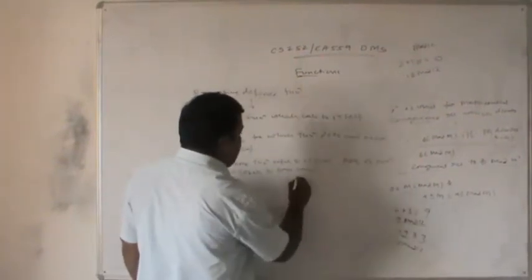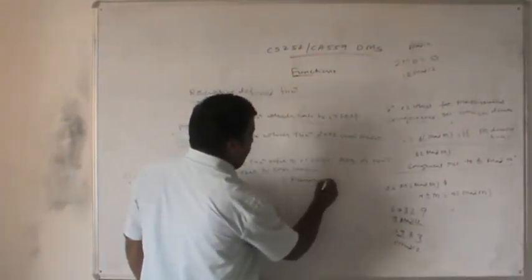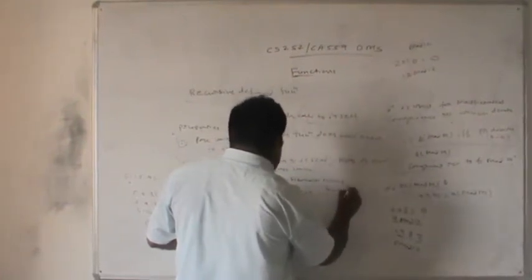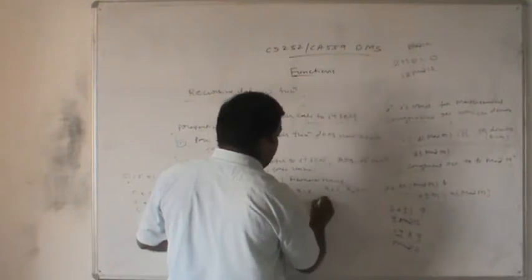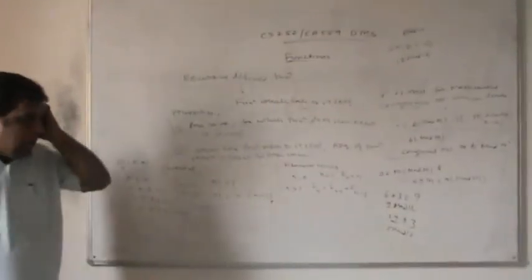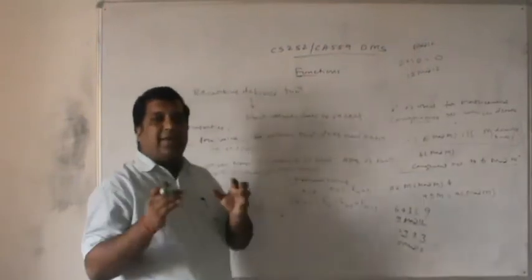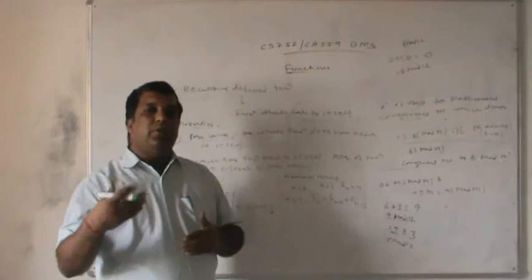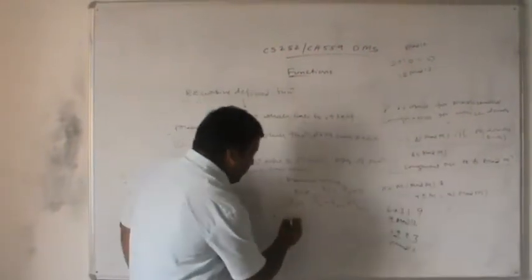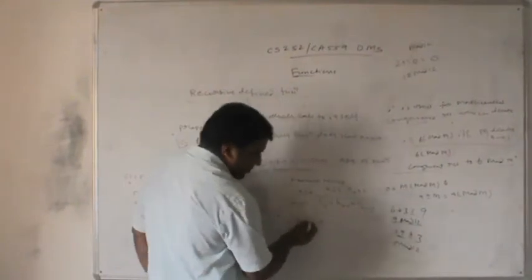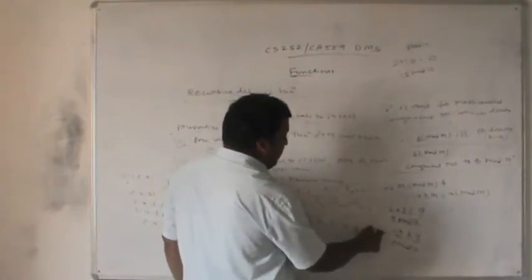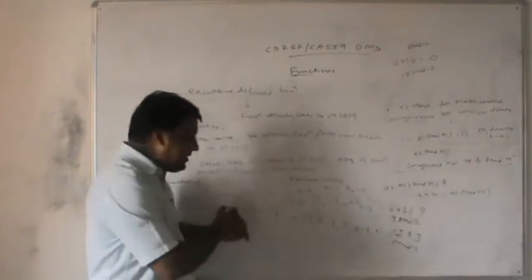The Fibonacci series is another recursive approach. If n = 0, F(n) = 0; if n = 1, F(n) = 1; if n > 1, F(n) = F(n−1) + F(n−2). The initial two terms are 0 and 1, and each subsequent term is the sum of the preceding two: 0, 1, 1, 2, 3, 5, 8, 13, 21, and so on. This is preceding two terms addition.